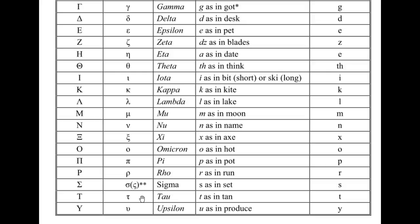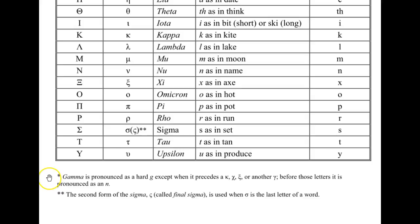Tau — T as in tan. Upsilon — U as in produce. Note the starred comment at the bottom: gamma is pronounced as a hard G except when it precedes a kappa, chi, xi, or another gamma. Before those letters it's pronounced as an N.